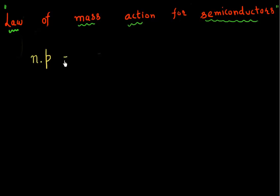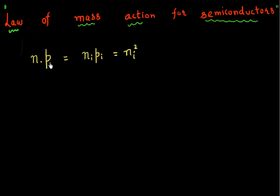Since this is a constant, I can equate it to the case when I have an intrinsic semiconductor. In that case I can write Ni — the number of electrons in my intrinsic semiconductor — multiplied by the number of holes in my intrinsic semiconductor. Since both of them are equal, this is just equivalent to Ni squared. Another way to state this law is that the concentration of electrons multiplied by the concentration of holes is equal to the square of the intrinsic carrier density.